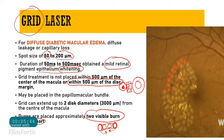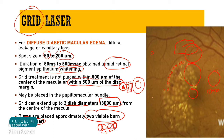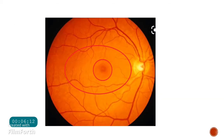The grid can be extended about two disc diameters — approximately 3000 micrometers — from the center of the macula. Since one disc diameter is about 1500 micrometers, you can give grid laser approximately two disc diameters superiorly, nasally, or on either side of the macula.